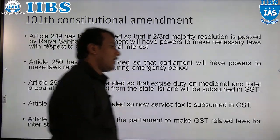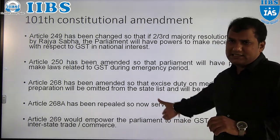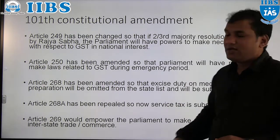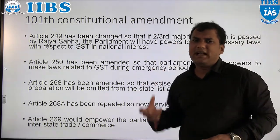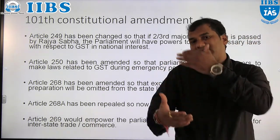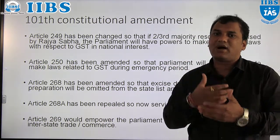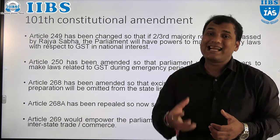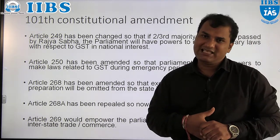Apart from that, Article 269 was also amended. According to the amendment under Article 269, Parliament has the power to make law related to interstate trade and commerce — meaning trade between one state to another state. Whenever there is a transaction or trade or commerce between one state to another state, Parliament will make that law, not the state assembly.